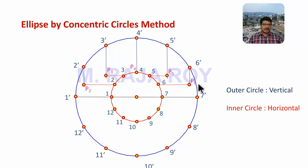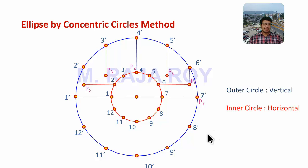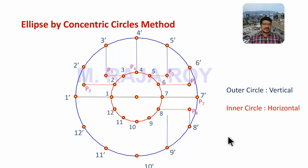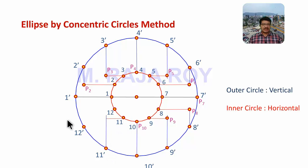For P7, drawing the vertical from 7 dash is sufficient — the horizontal from point 7 intersects at that same point, so 7 dash itself is P7. From 8 dash draw the vertical upward, and from 8 draw the horizontal towards the right to get P8. From 9 dash draw the vertical and from 9 draw the horizontal to get P9. For P10, point 10 itself is sufficient — horizontal is not required. From 11 dash draw the vertical and from 11 draw the horizontal to get P11. From 12 dash draw the vertical and from 12 draw the horizontal to get P12.